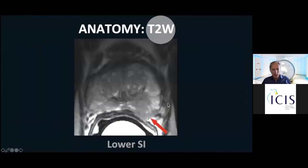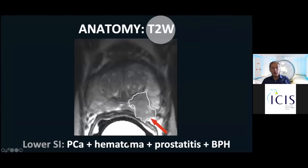When we see a low signal area, this can not only be cancer, but also can be due to hematoma, prostatitis, or BPH. Therefore, we need another technique to further differentiate.